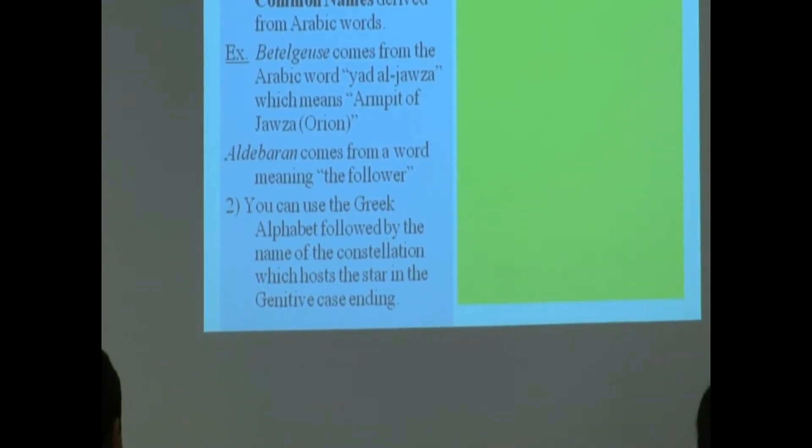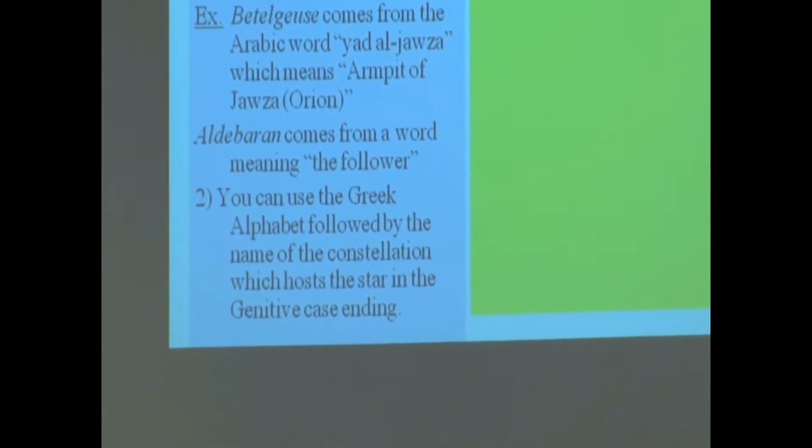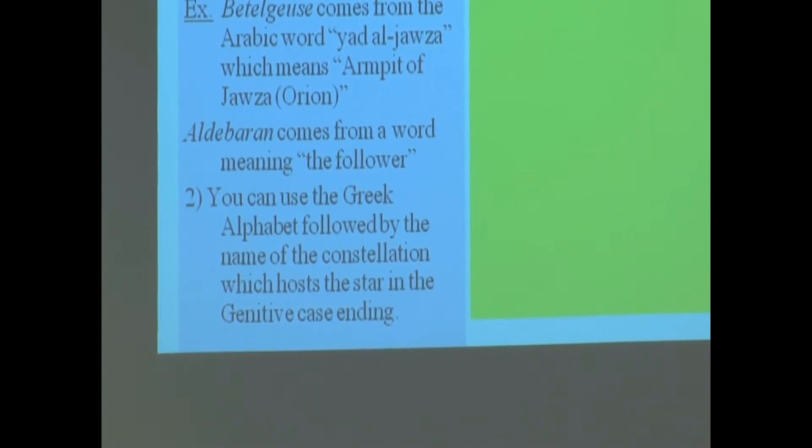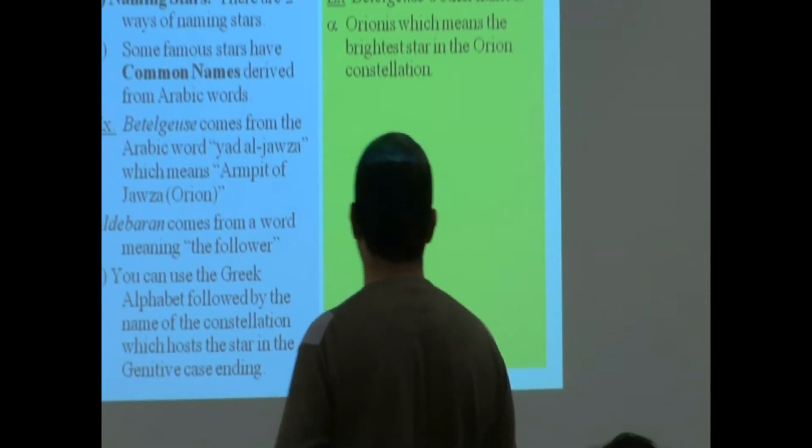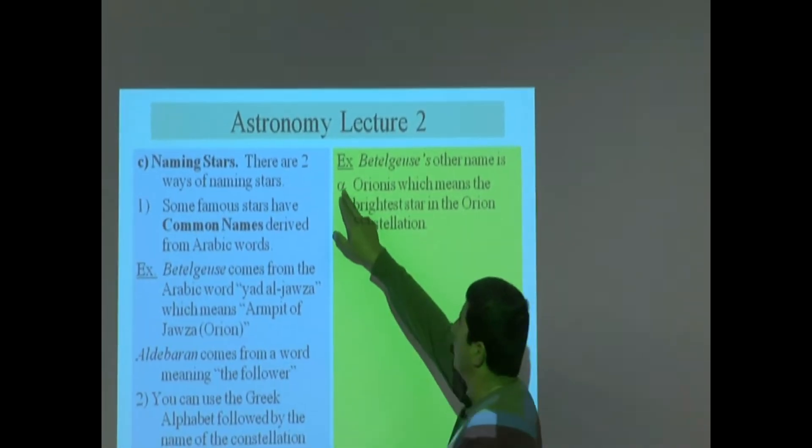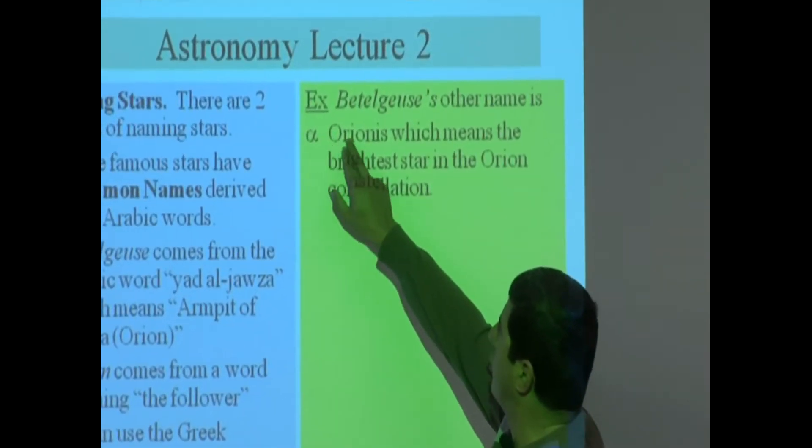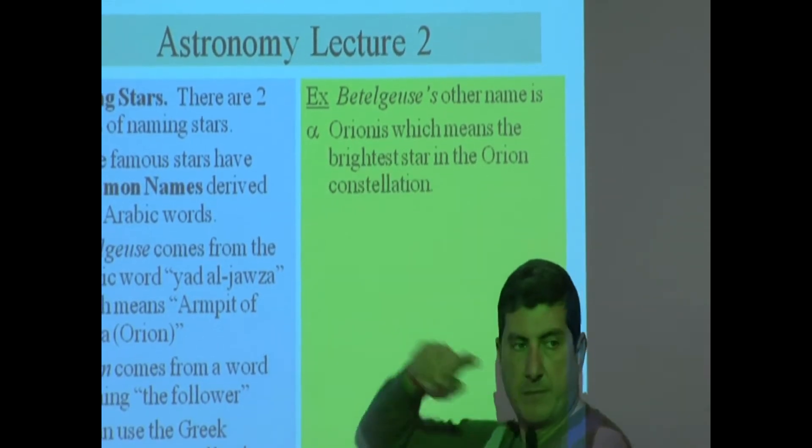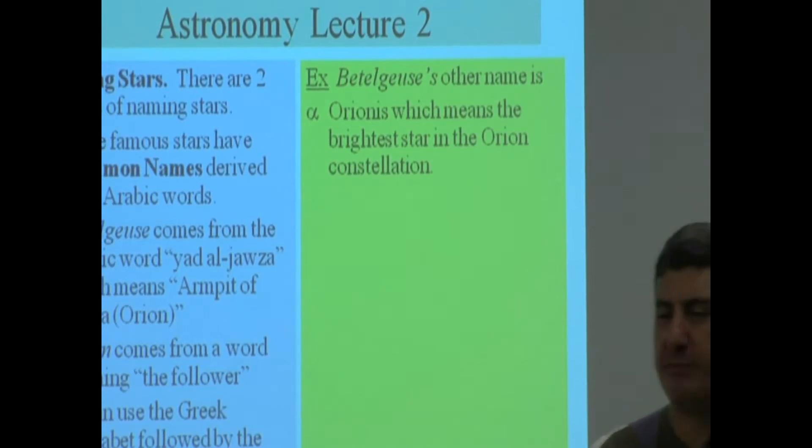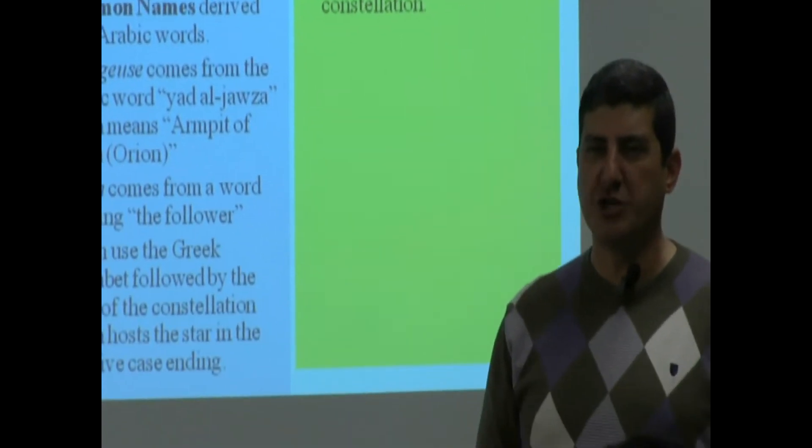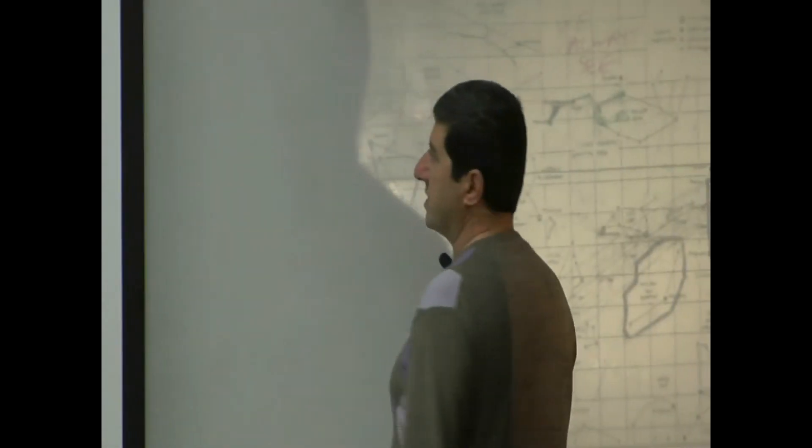So Betelgeuse is the common name. What would be the actual name of Betelgeuse? Here is how we would name it: we would name Betelgeuse Alpha Orionis. This way of naming a star is very useful because it already quickly tells you which constellation it belongs to. Alpha Orionis, you see?